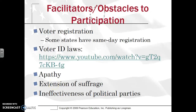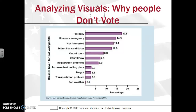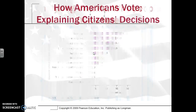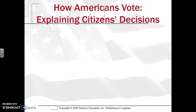Another facilitator is the extension of suffrage through the 15th, 19th, and 26th Amendments — these enable people to participate. One obstacle is the ineffectiveness of political parties, especially when elections are divisive, which can turn people off to politics. Interestingly, on sunnier days, turnout is actually higher than on rainy days. The number one reason people don't vote is that they say they're too busy, or there's an illness or emergency, they don't like the candidates, they have registration problems, or they simply forgot. Elections are on a Tuesday — why not on a weekend?